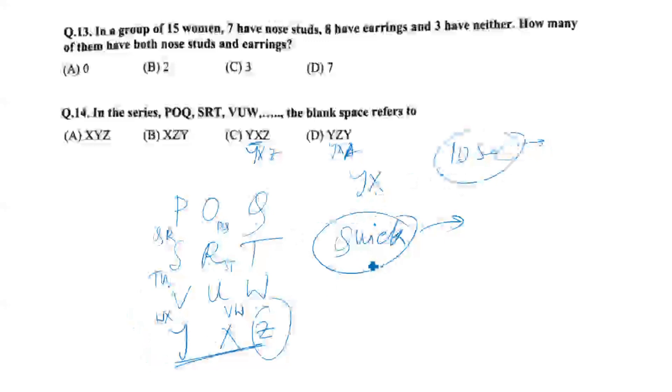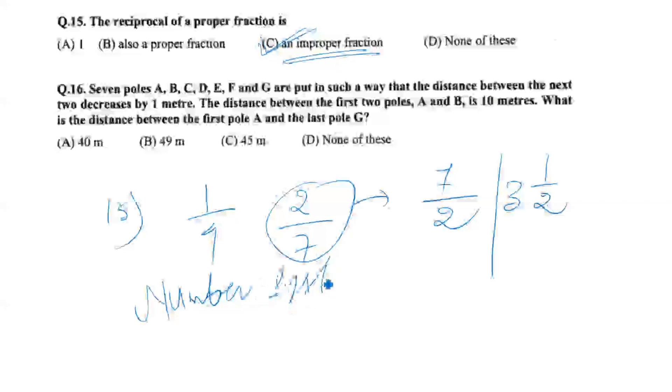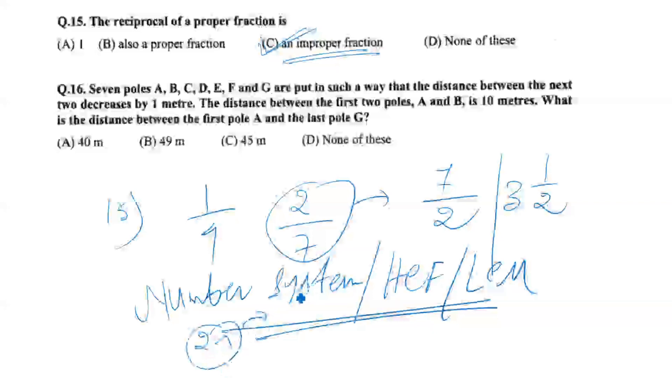The reciprocal of a proper fraction is what? The reciprocal of a proper fraction becomes an improper fraction. For example, if the fraction is 2 by 7, the reciprocal is 7 by 2, which is an improper fraction. This relates to the number system concepts including HCF, LCF, and other topics. At least 2 or 3 questions appear from this area. Types of numbers include integers, fractions, rational numbers, irrational numbers, negative numbers, and positive numbers.